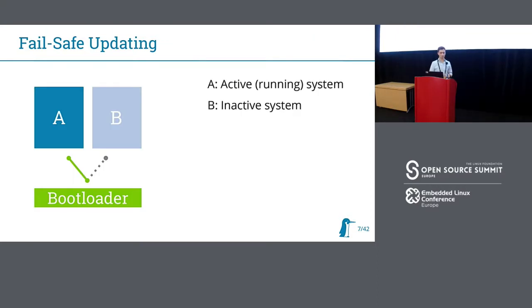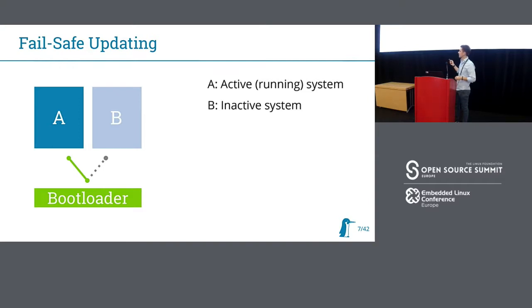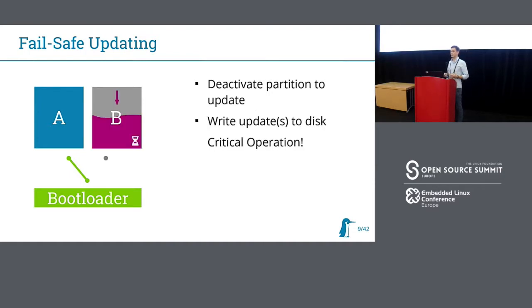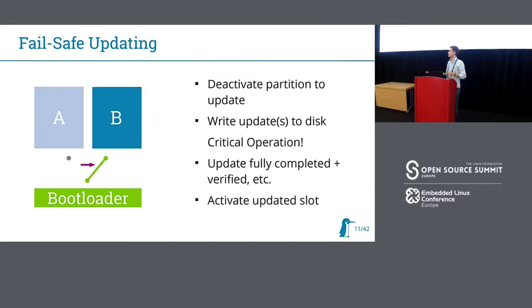The simplest case for redundancy is an A/B redundancy. We have an active system here and an inactive B system of equal size — normally partitions of equal size — with the bootloader as the switching point. When we start the update running from the A image, the initial thing we do is deactivate the B slot in the bootloader so we don't boot it accidentally. Then we write the update to the B slot. Once writing and verification are complete, at the very final step we notify the bootloader to switch to the B partition. This way we don't end up with an active system that is 50% installed.